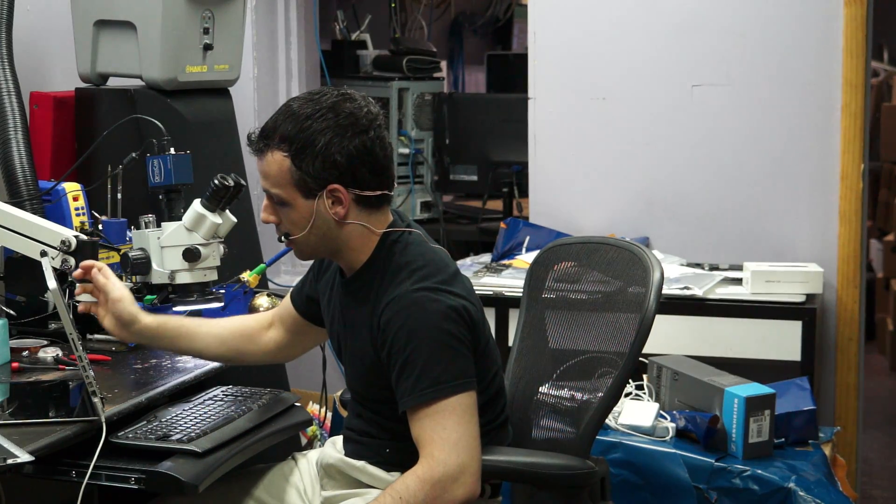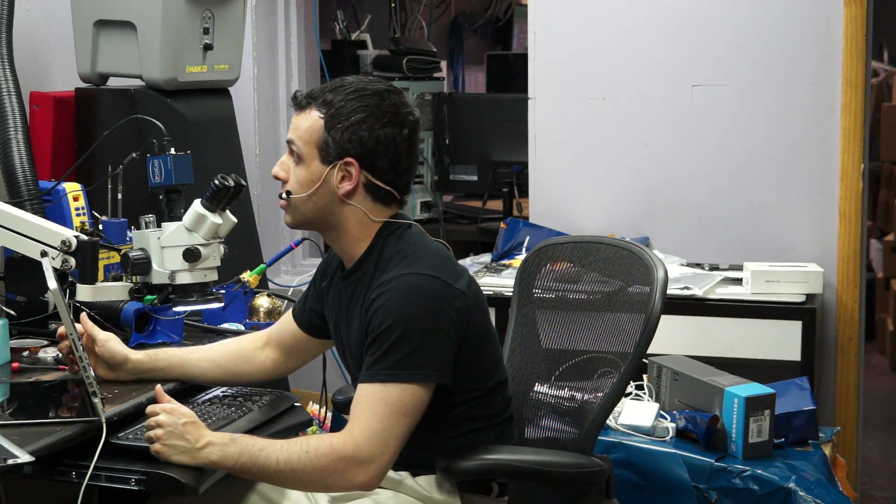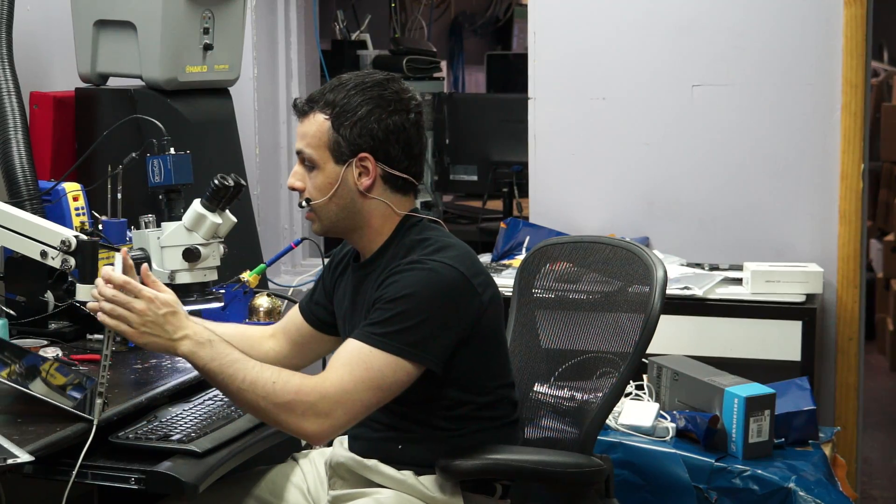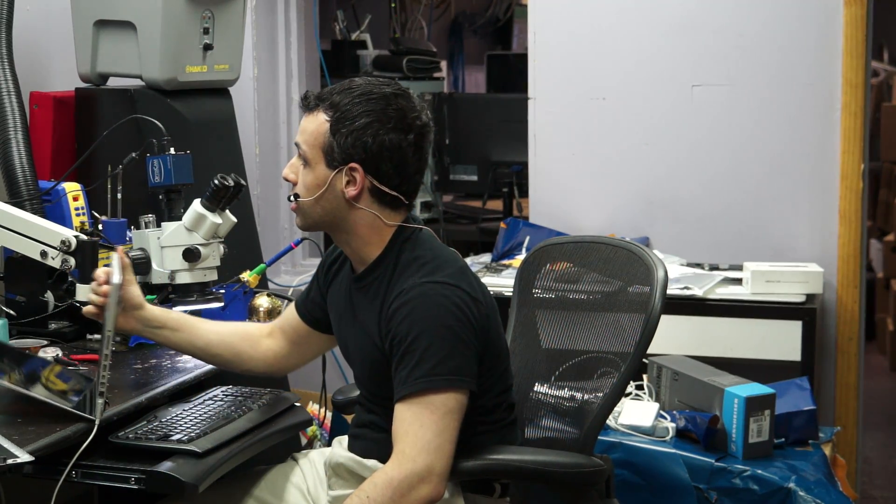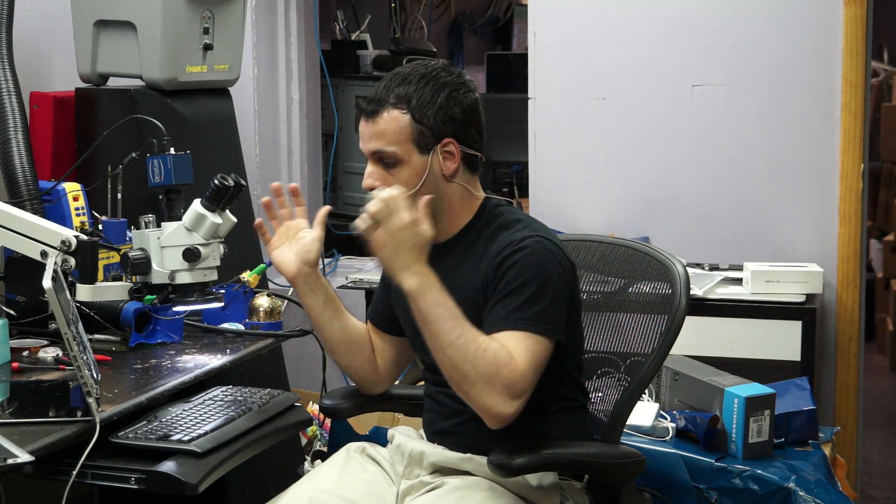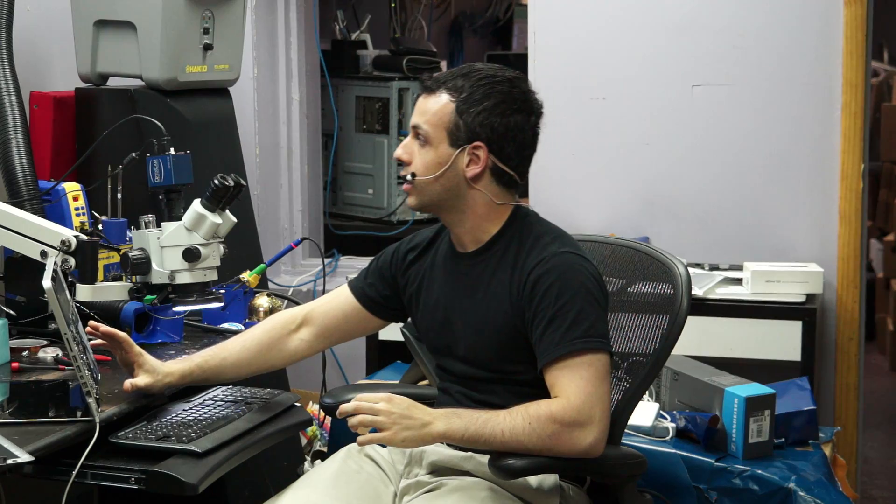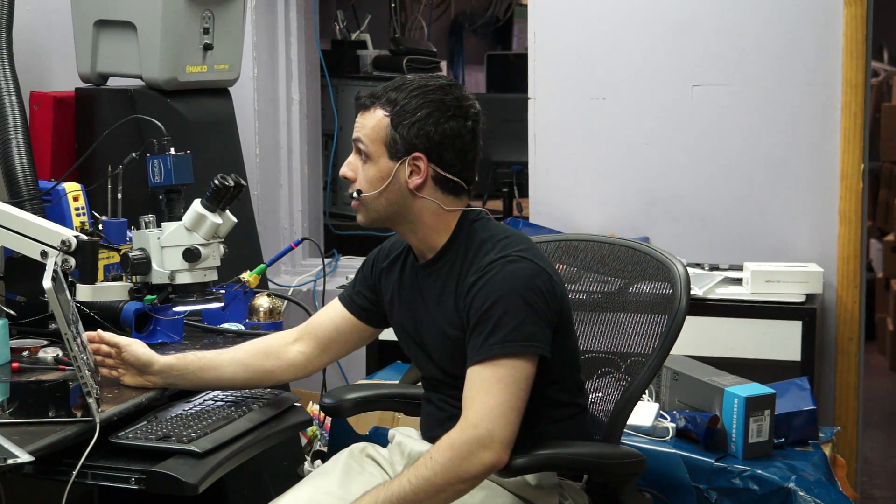This is another machine that somebody brought in with a board issue. This is an 820-3115 and the described issue is no picture on the screen. What they want me to do is replace the LCD connector. This is somebody where it's like, I want you to only replace the LCD connector. I don't have a picture. I read online. I probably have the LCD connector. Replace the LCD connector. I don't get a picture.